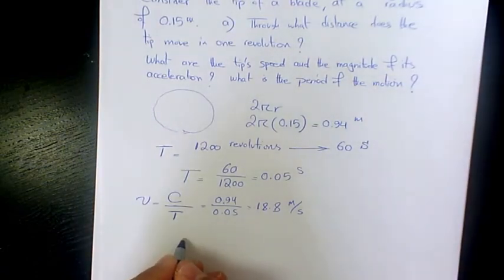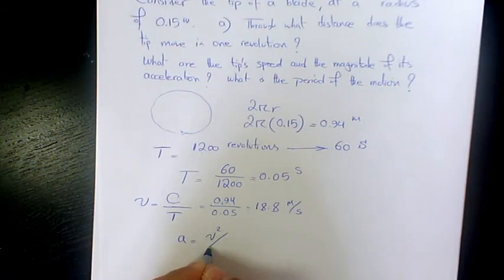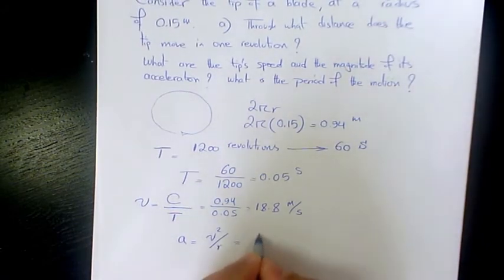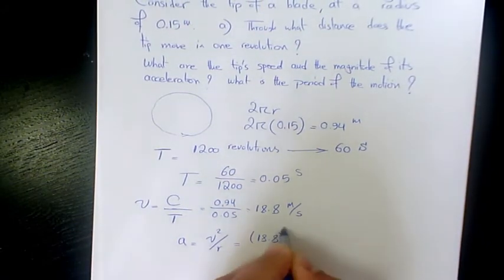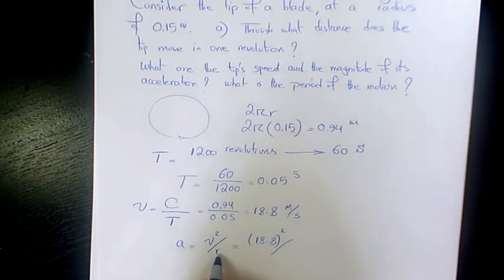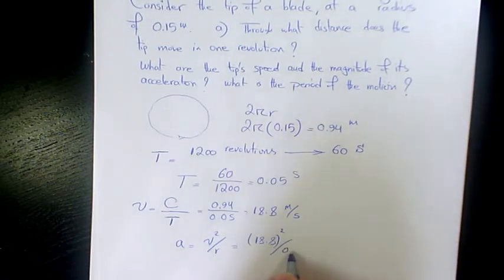Finally, we need to find out the acceleration. Acceleration is v² divided by r, which will be 18.8² divided by the radius, which is 0.15.